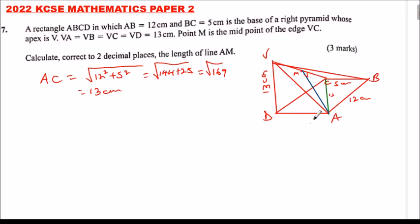To get AM, we can say AM equals the square root of 13 cm (the hypotenuse) squared minus 6.5 cm (half of 13 cm) squared. This equals the square root of 169 minus 42.25, which equals the square root of 126.75 cm.